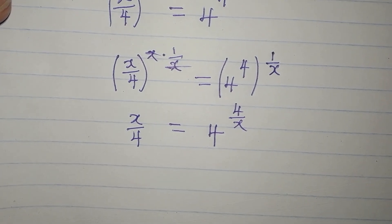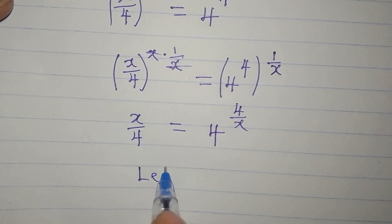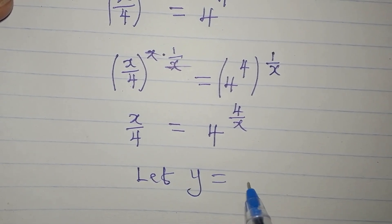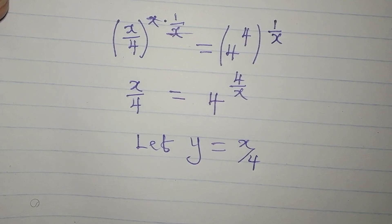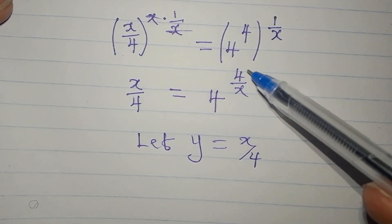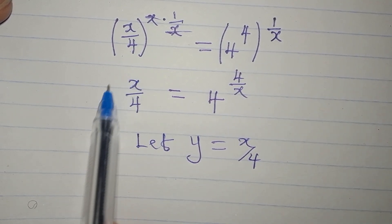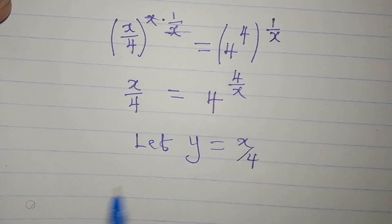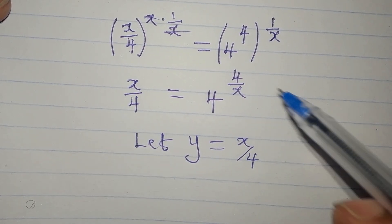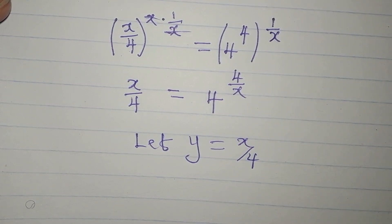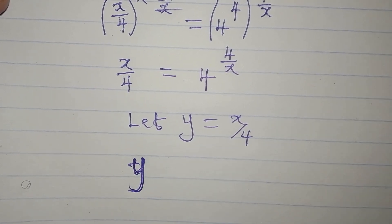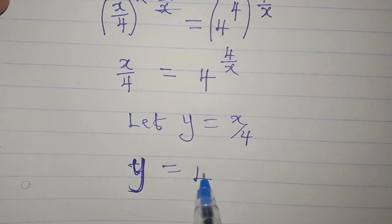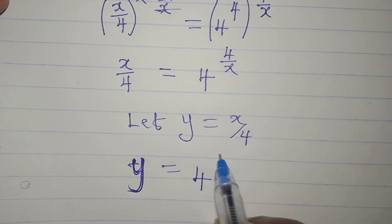We have x over 4 on the left and 4 over x on the right. Let's let y equal x over 4. Wherever we see x over 4 we write y. Note that 4 over x is the reciprocal of x over 4, so 4 over x equals 1 over y. Substituting, we have y equal to 4 to the power of 1 over y.